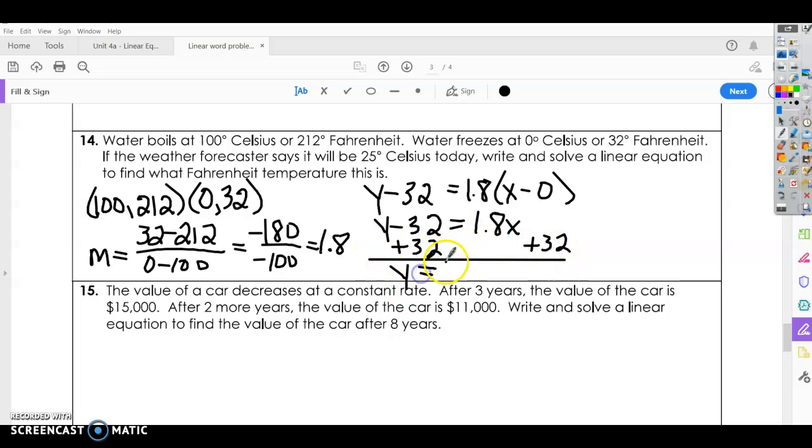Alright, and let's go back and see what it says. Write and solve a linear equation to find what Fahrenheit temperature this is. Alright. If the weather forecaster says it's 25 degrees Celsius. Okay, so I didn't read the whole sentence. If the weather forecaster says it's 25 degrees Celsius, write and solve a linear equation to find what Fahrenheit temperature this is. Alright, so if you go up here, water boils at 100 Celsius, 212 Fahrenheit. Celsius is our x. So we're going to plug in the 25 for x.